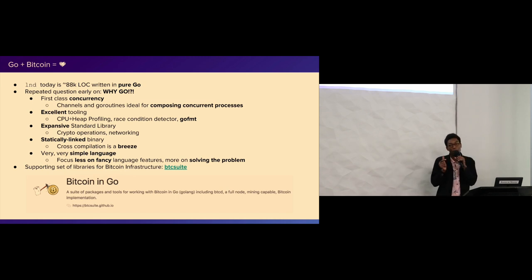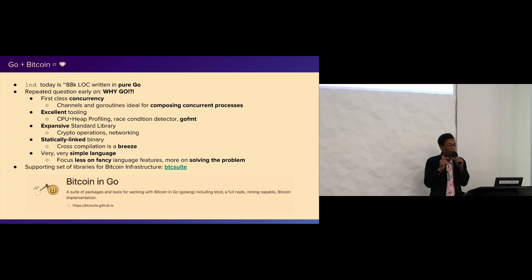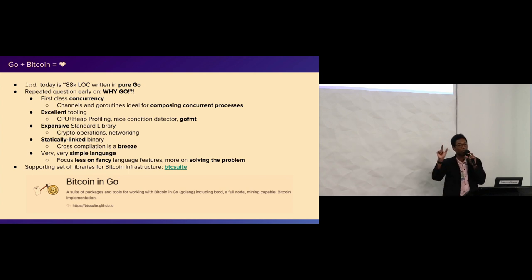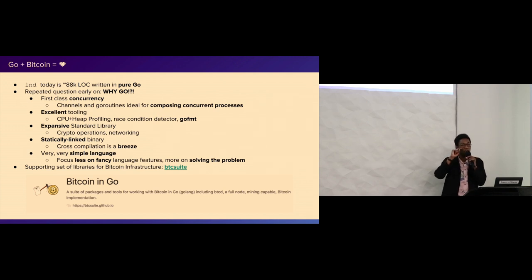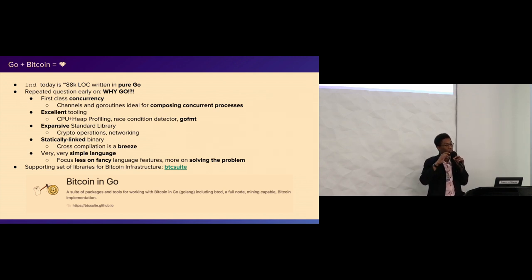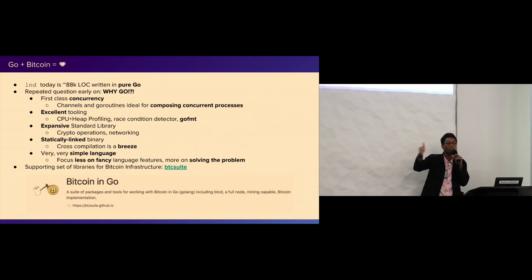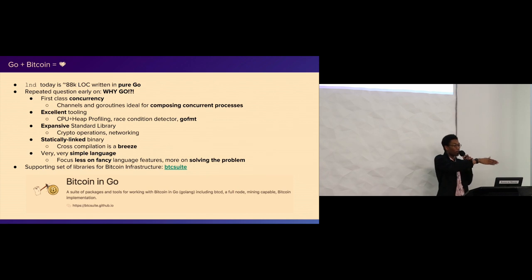A goroutine is basically a lightweight thread - like a green thread, similar to Python greenlets. Then Go has these things called channels: you have these threads and they can communicate with each other using channels, sending messages back and forth pretty easily. This makes it easy to create concurrent architectures - you can have producers and consumers with a pipeline, and do subscriptions pretty easily. It's used very heavily throughout the entire codebase.